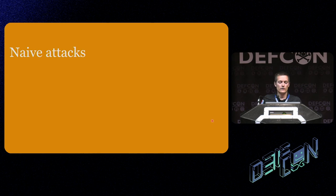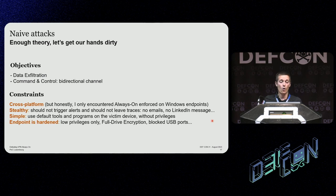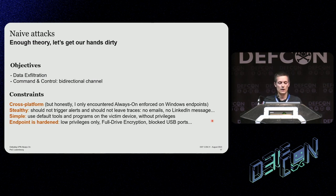We've looked at trusted network detection and captive portal detection, and we can already find some attacks to try. What we are trying to achieve is data exfiltration — big files — or establishing a command and control with a bidirectional channel. Again, with constraints: we are not admin, we may not even have access to the laptop. We want simple attacks without binaries that we'd have to compile and put on the laptop, and the endpoint is hardened.